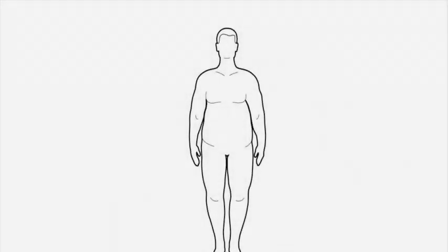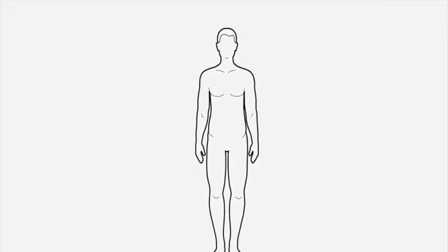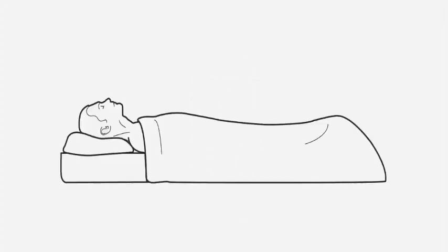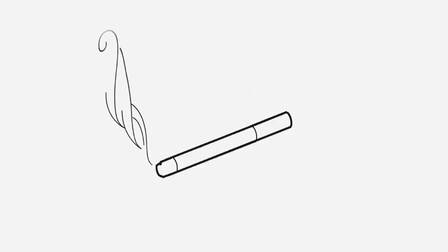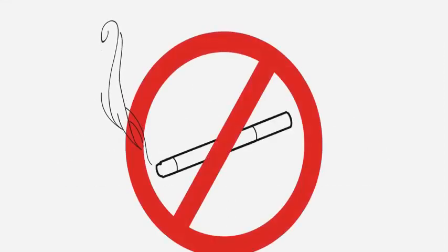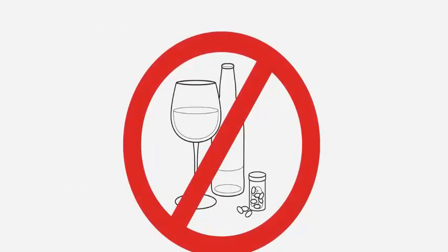Your doctor may recommend lifestyle changes to treat obstructive sleep apnea, including losing weight, sleeping on your side, not smoking, and avoiding substances that can make you sleepy such as alcohol and sedatives.